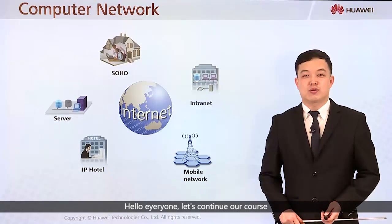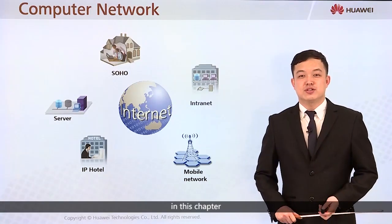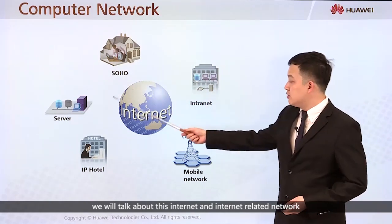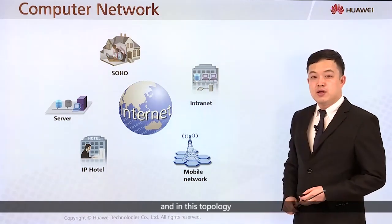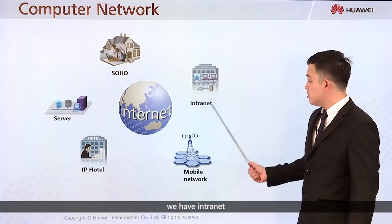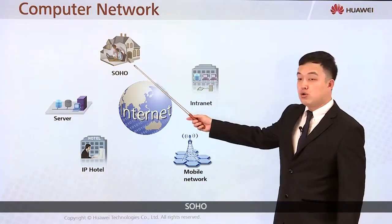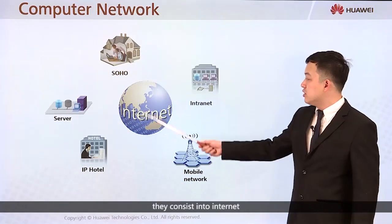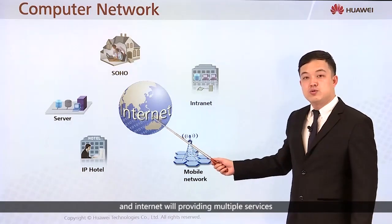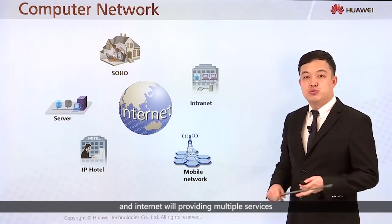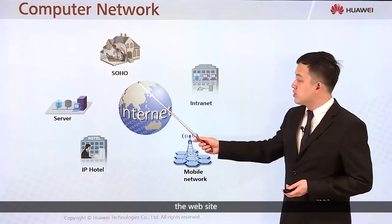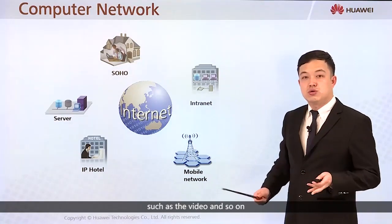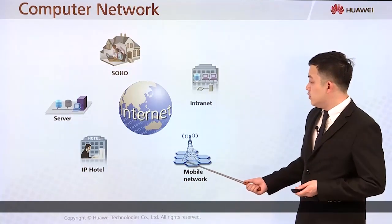Hello everyone, let's continue our course. In this chapter we will talk about the internet and internet-related networks. In this topology we have intranet, mobile network, SOHO server, and IP hotel. The intranet provides multiple services such as websites, email, video, and so on.